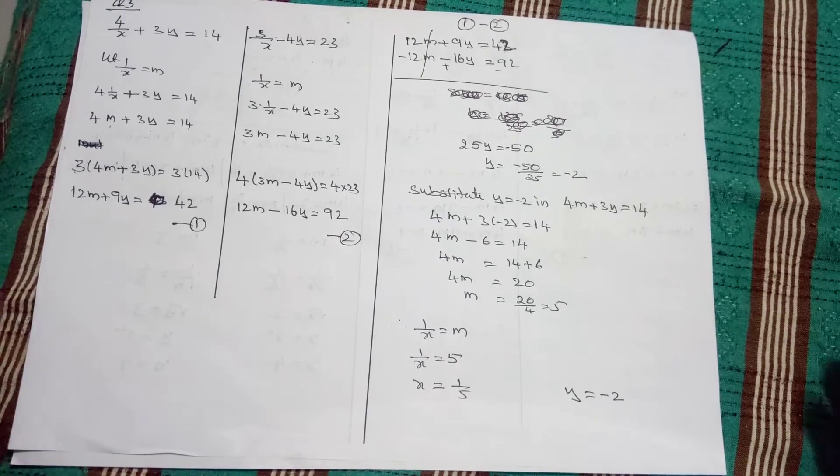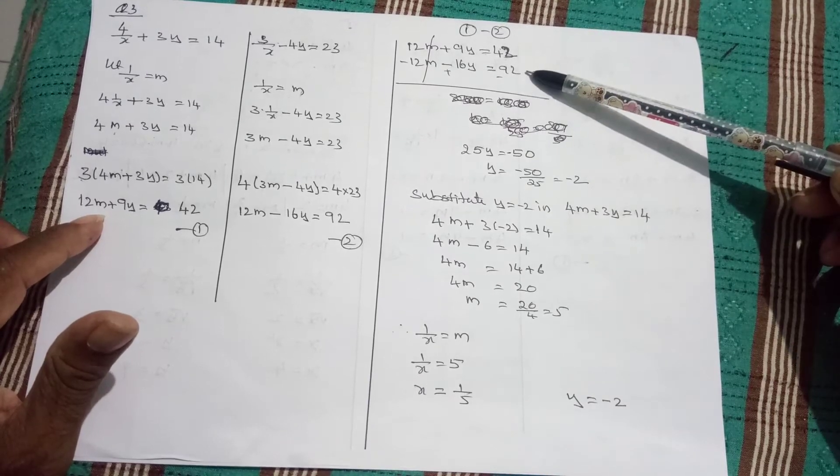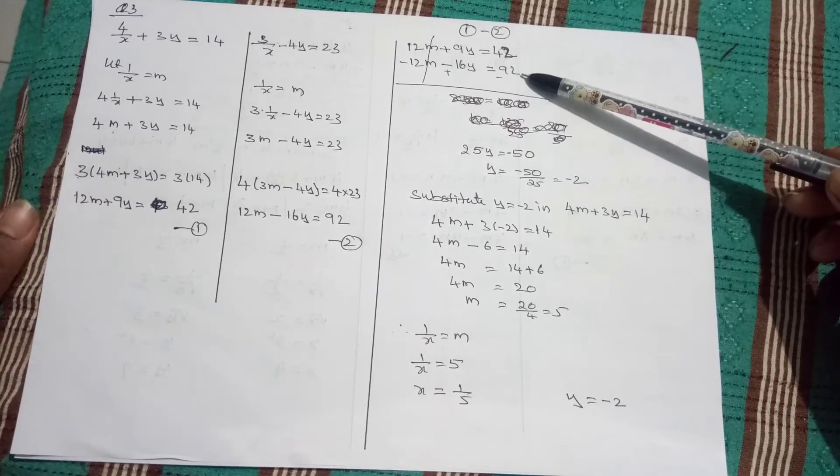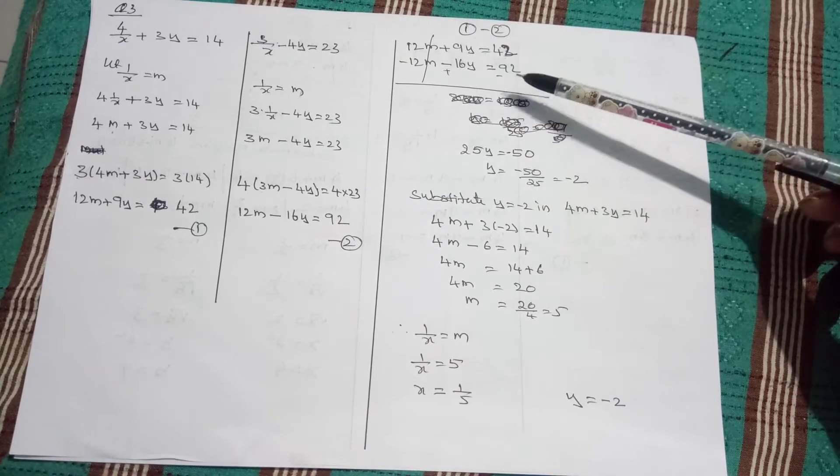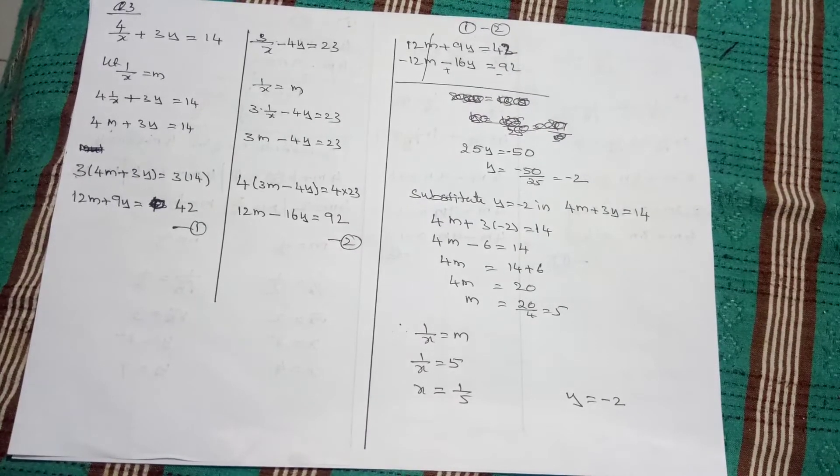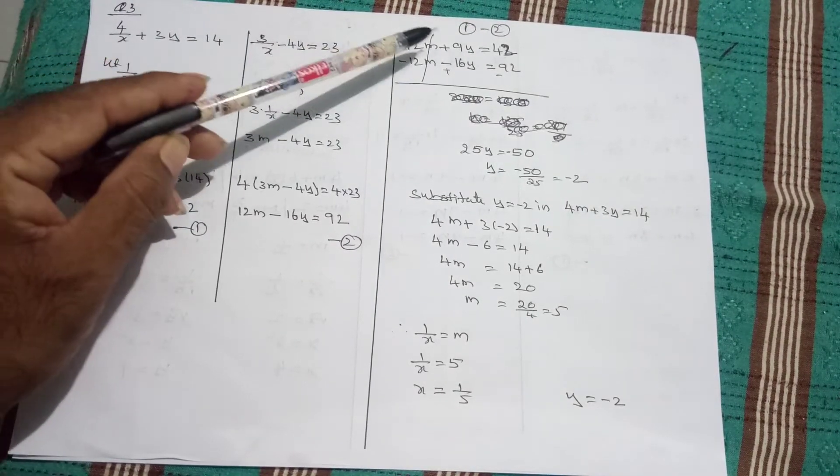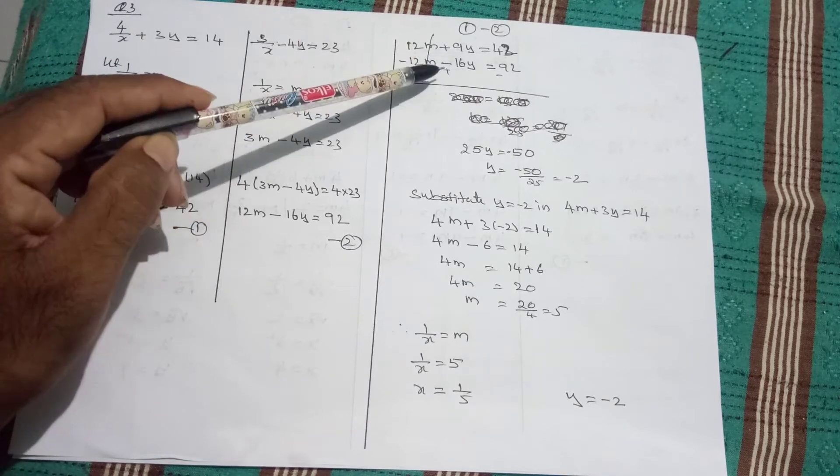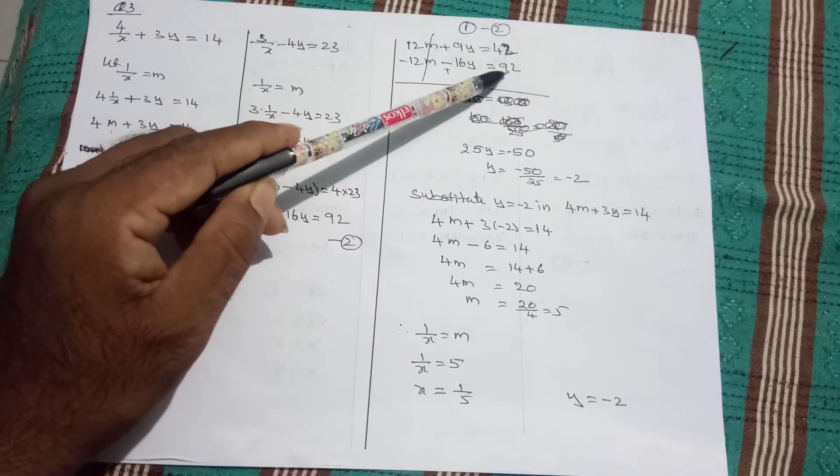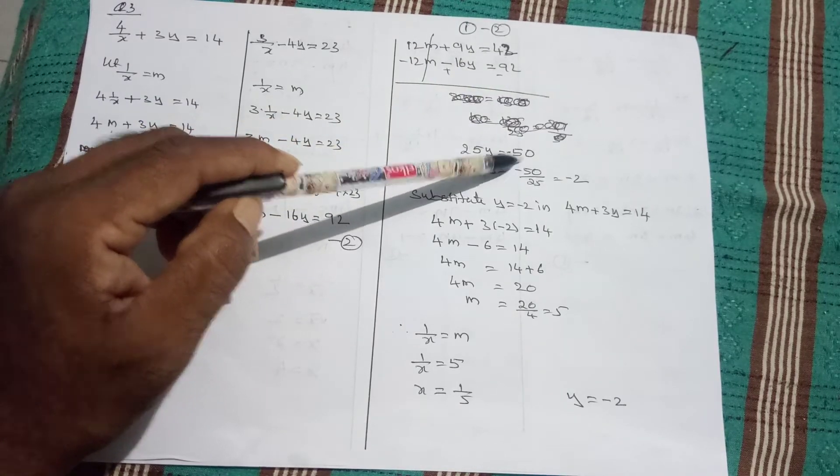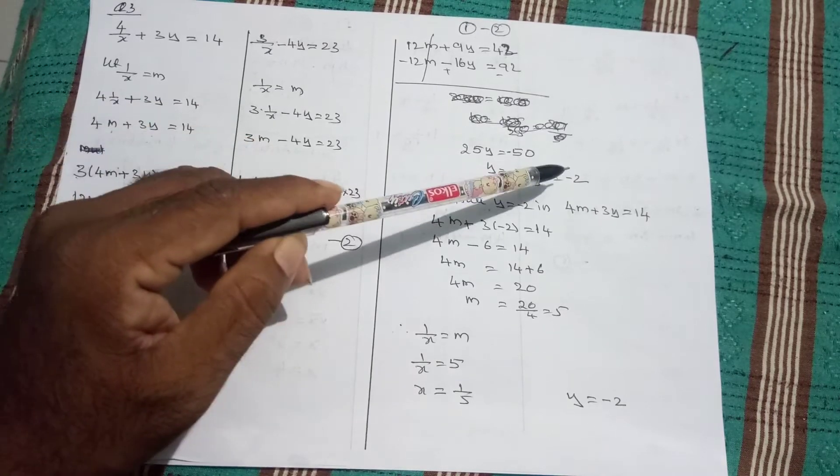We can easily cancel them. 1 minus 2, the first equation minus the second equation. Write the first equation, write the second equation. Change all the term symbols in the second equation. Therefore, 12m going to cancel. And here 9y plus 16y, that is 24y, and 42 minus 92, that is minus 50. So, after reduction, y equals minus 2.